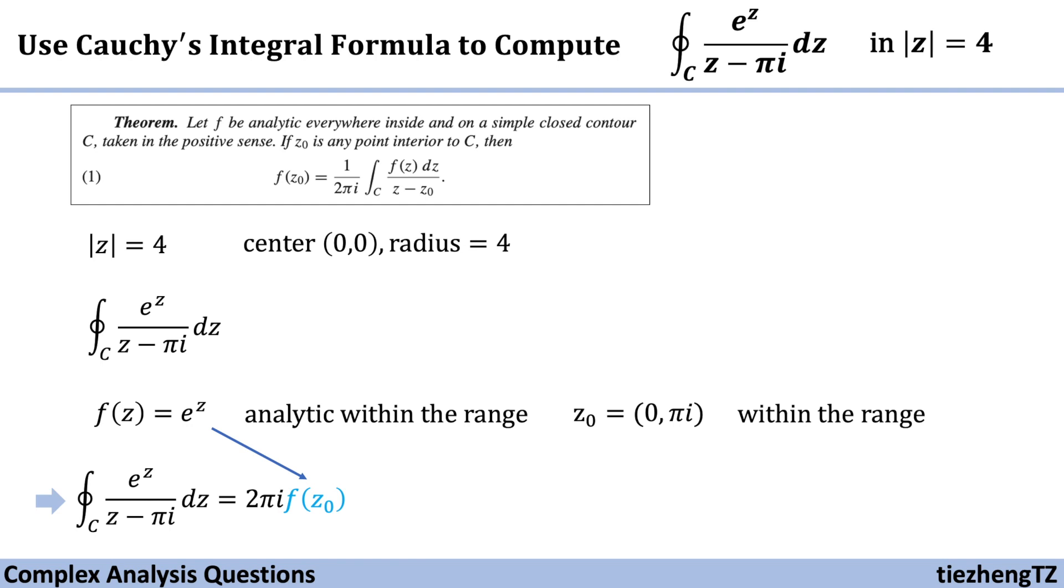Next step, we substitute. This equation becomes 2πi times e^πi, and we know e^πi = -1.